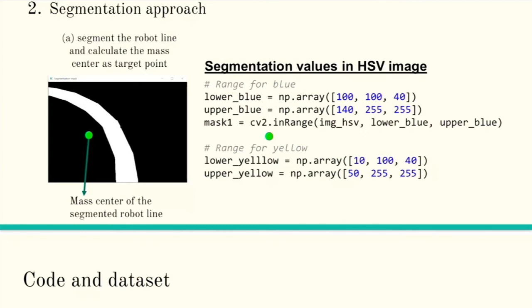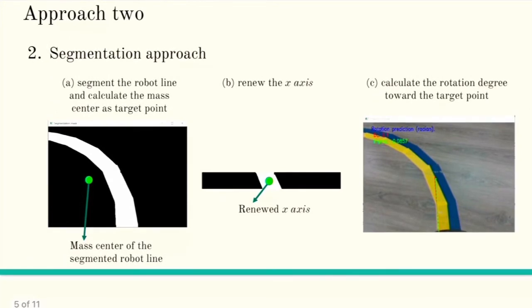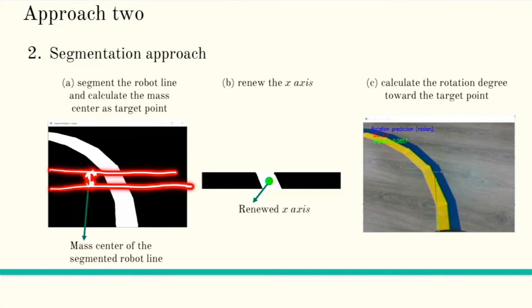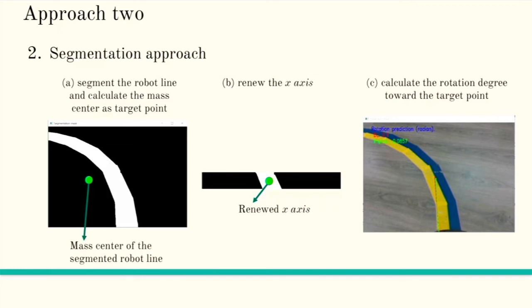To get the center of mass of the white segmented area, we use connected component analysis, which is available via the OpenCV API. However, the center of mass can sometimes fall outside the line. To fix this, we project the target point by cropping the image using delta-up and delta-down values, then apply connected component analysis again to get the x-axis of the centroid as our target point.